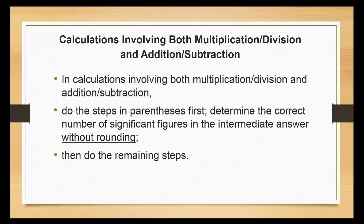In calculations involving both multiplication and division and addition and subtraction, do the steps in parentheses first. Determine the correct number of significant figures in the intermediate answer, but you don't actually do anything with it. Keep it in the back of your mind. Then do the remaining steps and figure out your final answer. For instance here, calculation of 3.589 times (5.67 minus 2.3). Because this is in parentheses, I'm going to do that first. That comes out to be 3.37.